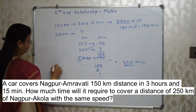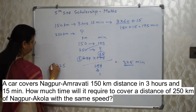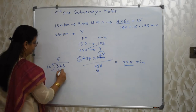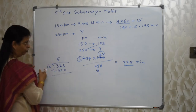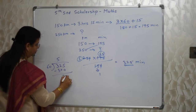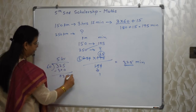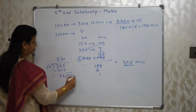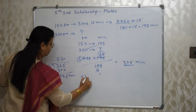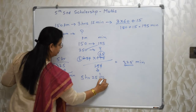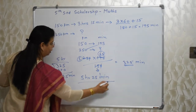We had converted hours and minutes into minutes for convenience. So this answer is in minutes. We need to convert back into hours and minutes: 325 divided by 60. 6 fives are 300, remainder 25. So our answer is 5 hours 25 minutes.